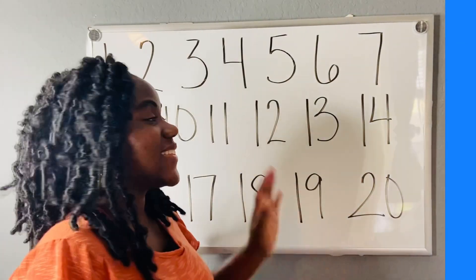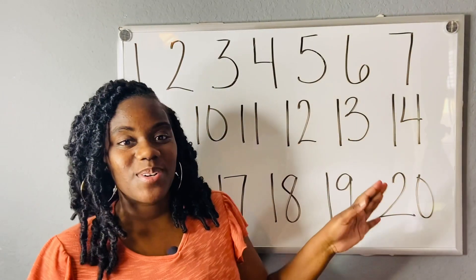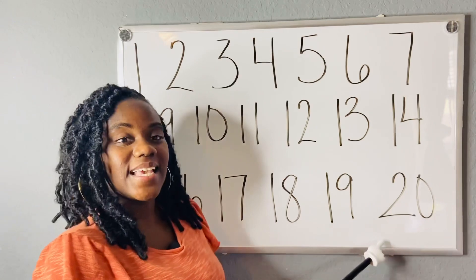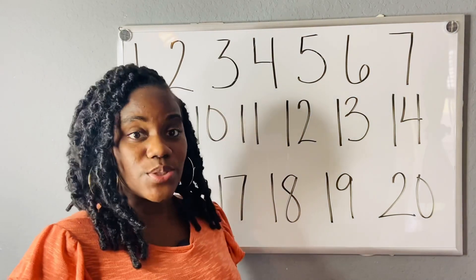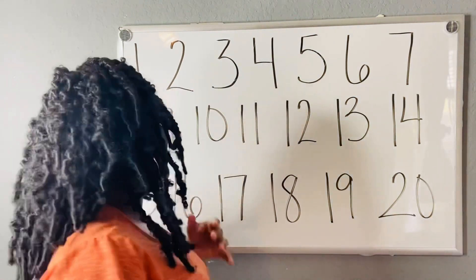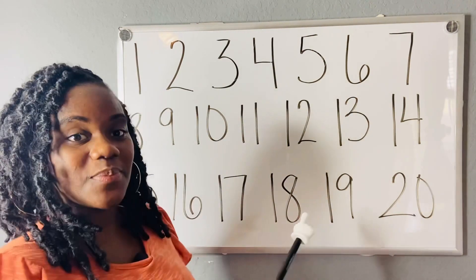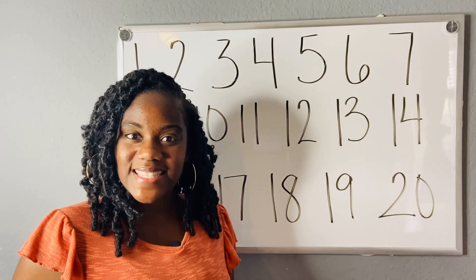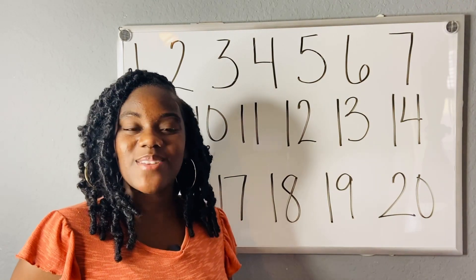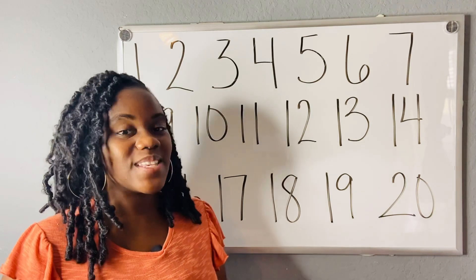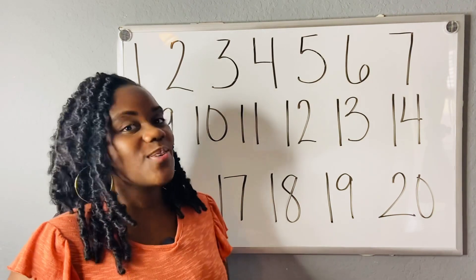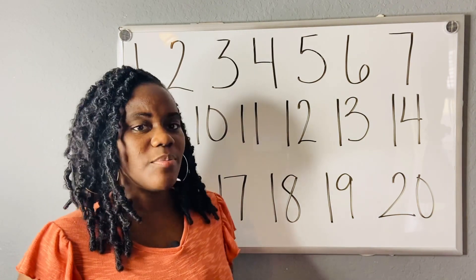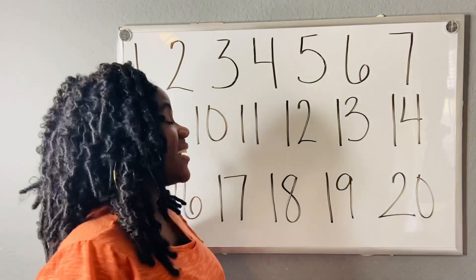Okay, so these are numbers 1 to 20. First we are going to count the numbers, and then I am going to erase some of the numbers and we are going to have missing numbers. So you are going to help me find out what numbers are missing. Let's get started.